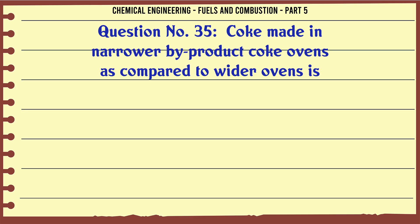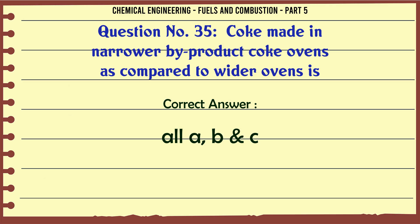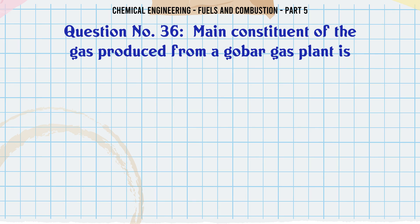Coke made in narrower by-product coke ovens as compared to wider ovens is: A. Less reactive. B. Stronger. C. Smaller in size. D. All A, B and C. The correct answer is all A, B and C.